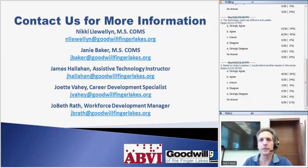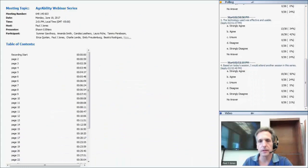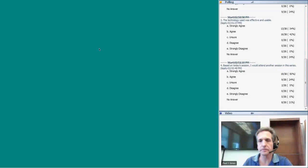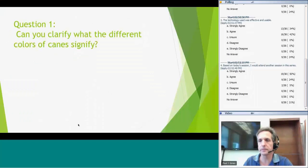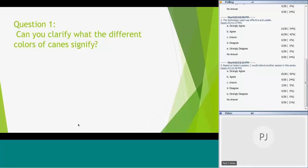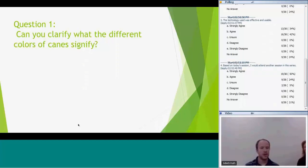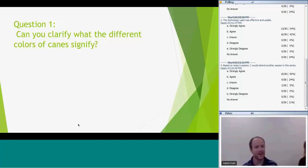At this point, I'll turn things over to Sean Ehlers, who is assisting us with technical aspects today. He will put questions on screen for the staff at Goodwill of the Finger Lakes to respond to. Our first question: can you clarify what the different colors of canes signify? I'm going to turn this question over to Janie.